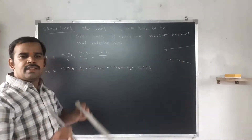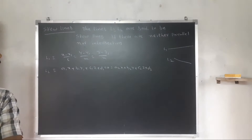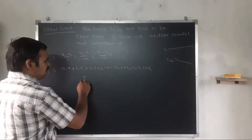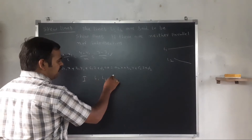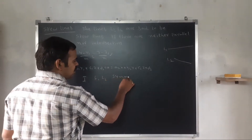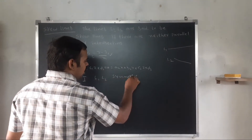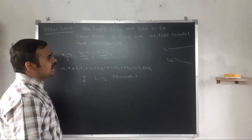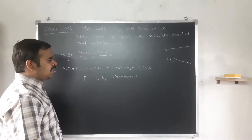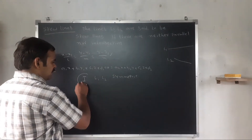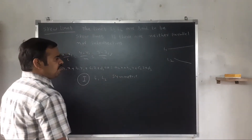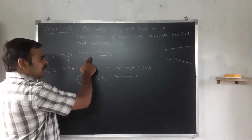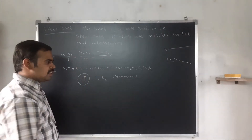We have three methods to find the shortest distance. Method 1: both lines L1 and L2 are given in symmetric form — using the formula (x - x1)/l = (y - y1)/m = (z - z1)/n.